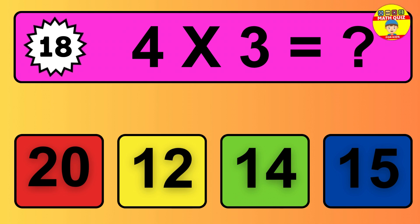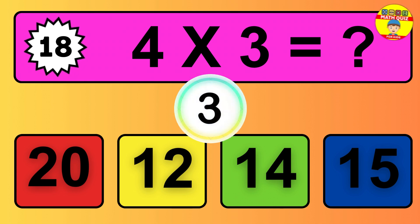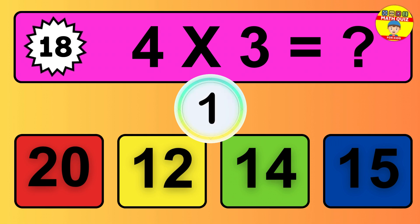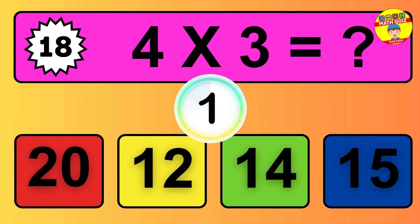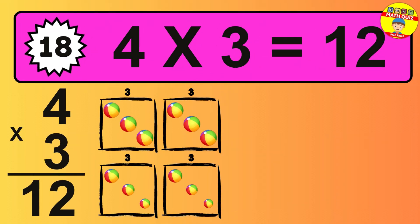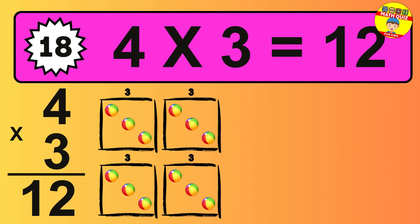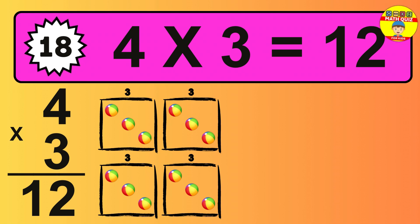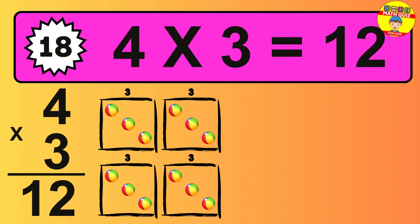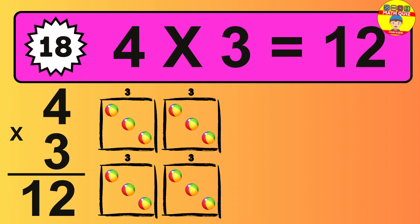Question 18. 4 times 3 equals what? The answer is 4 times 3 is 12. To calculate, we have 4 groups with 3 balls each one. So how many balls do we have? 12 balls.